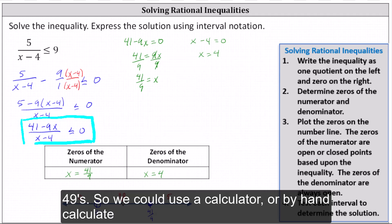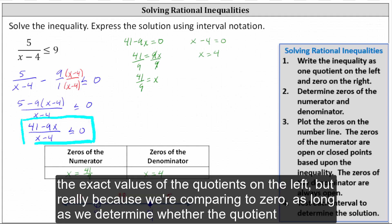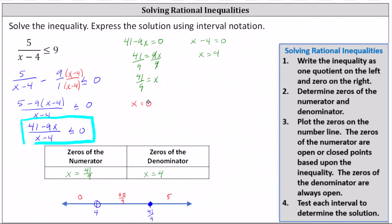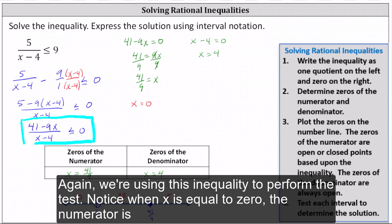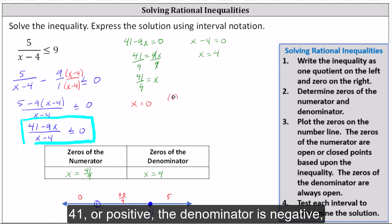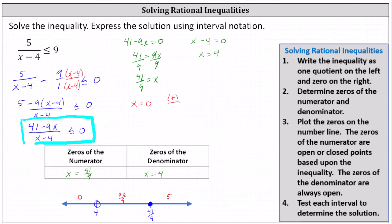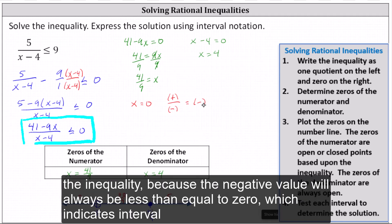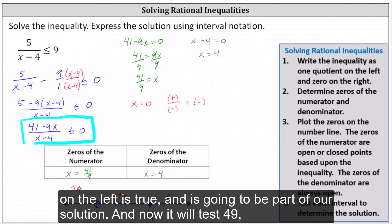We could calculate exact values, but since we're comparing to zero, we only need to determine whether the quotient is positive or negative. Testing x equals zero: the numerator is 41, which is positive, and the denominator is negative. A positive divided by a negative is negative. A negative value always satisfies the inequality because it is less than or equal to zero, so the interval on the left is true and part of our solution.